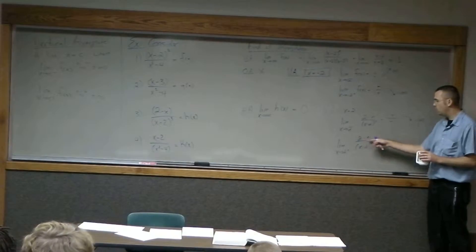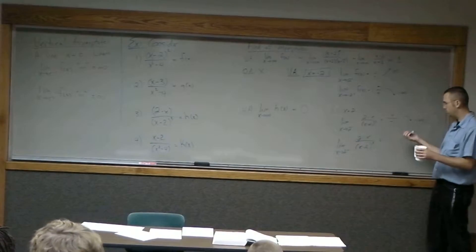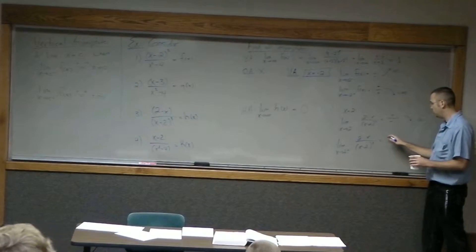If we take a number just a little bit bigger than 2, what happens at the top of the positive range? It's going to be negative, right? 2.1 for example.